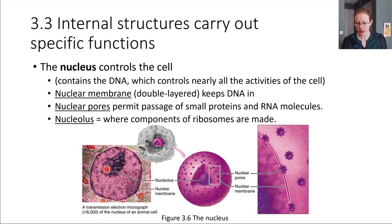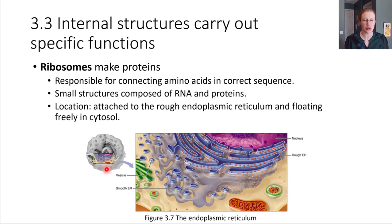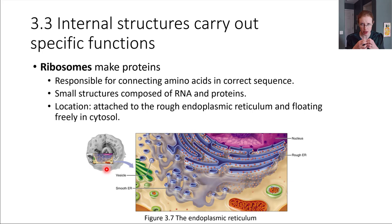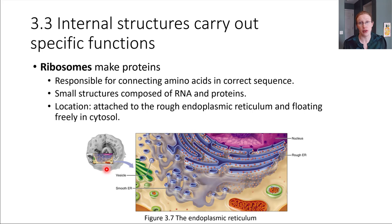Next, let's talk about ribosomes. Ribosomes are very small structures with the job of making proteins — specifically, connecting amino acids together in the proper sequence, which then folds into a three-dimensional protein. Ribosomes help facilitate this chemical reaction: the peptide bonds formed between adjacent amino acids are formed with the help of a ribosome. Importantly, ribosomes are not bounded by a membrane — they are a little different in terms of their structure compared to other organelles.